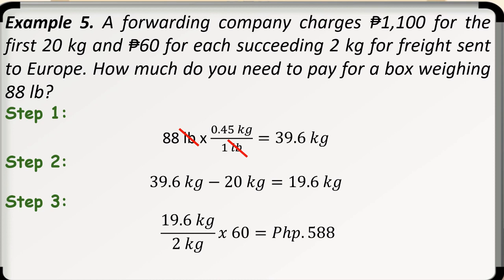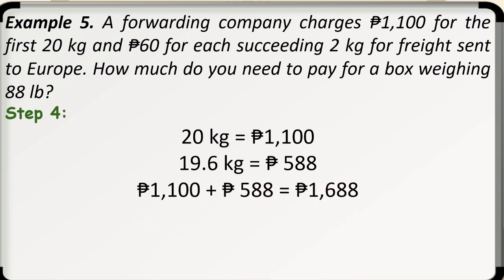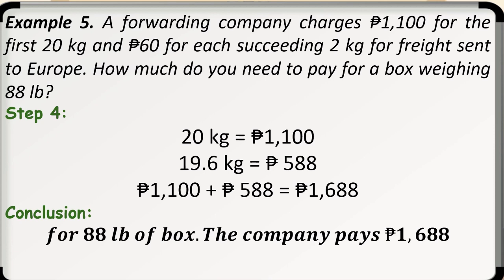And step number 4. Since the charge for the first 20 kilograms is 1,100 pesos and the succeeding or excess weight charges 588 pesos, we will add the 2 for us to get the total charges we need to pay for a box weighing 88 pounds. So, we have 1,688 pesos. So, therefore, for 88 pounds or 39.6 kilograms of box, the company pays 1,688 pesos.